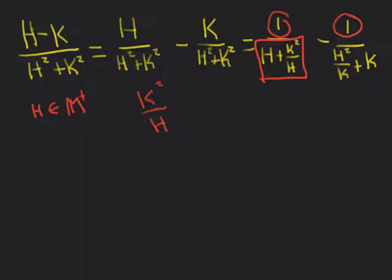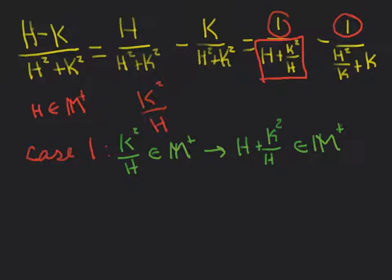So we have three cases to consider. Case 1: k squared divided by h is infinite — and it's going to be positive infinite. In this case, h plus k squared over h is also positive infinite.